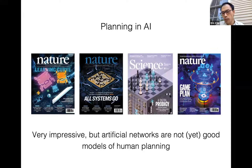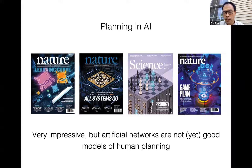People plan all the time — not just in games, but also when getting from A to B, doing career planning, or even writing or programming. Those are all planning problems, and people are pretty good at those. But we don't really understand the processes that go into how humans plan. In spite of a lot going on in computer science, the psychology of planning is a little bit lagging behind.